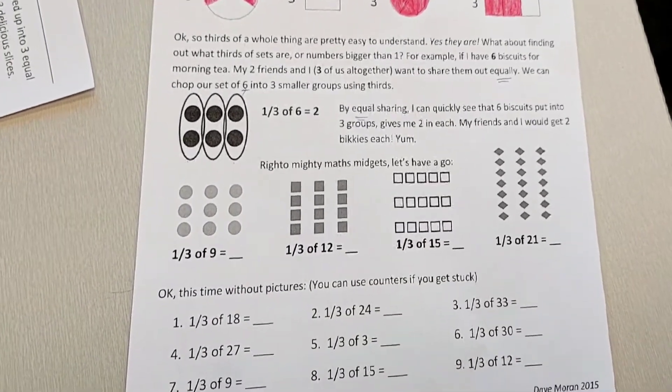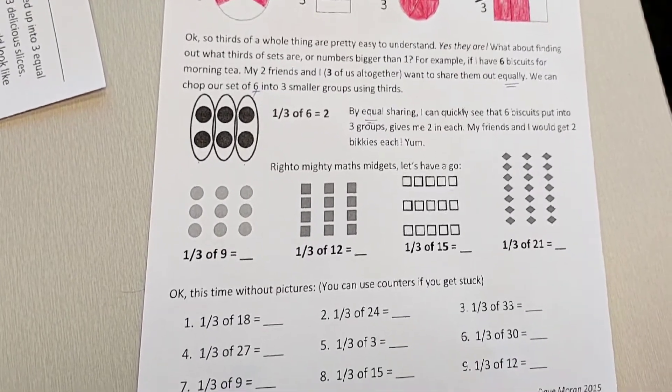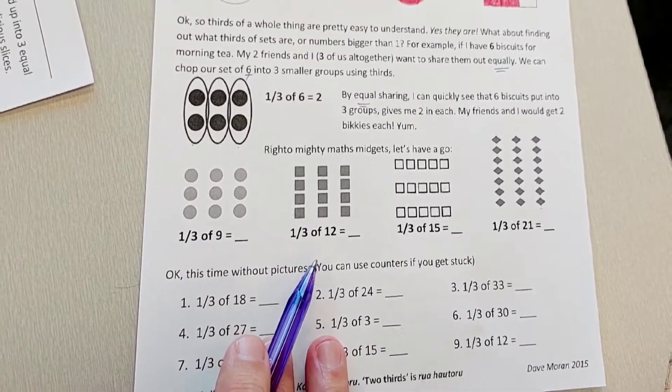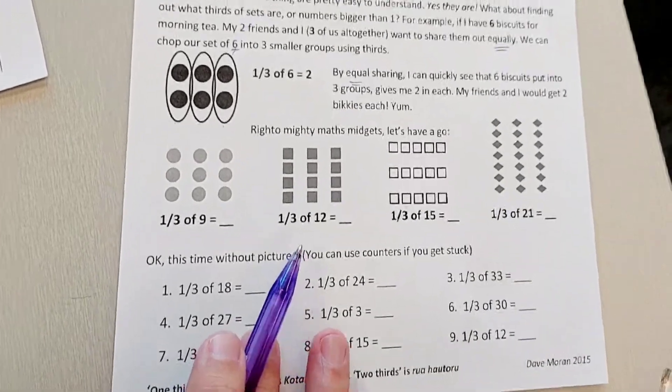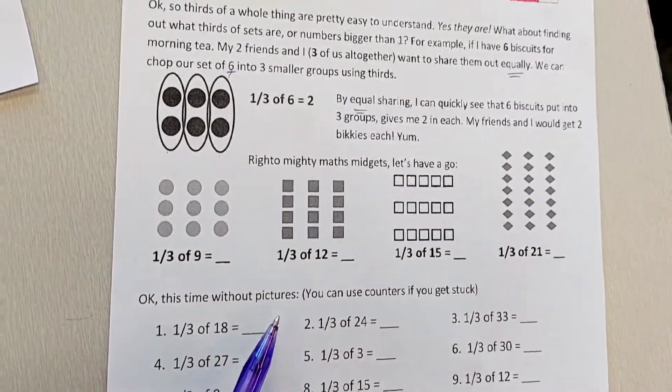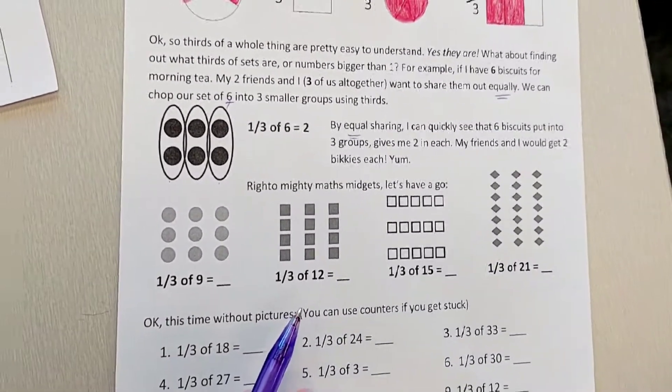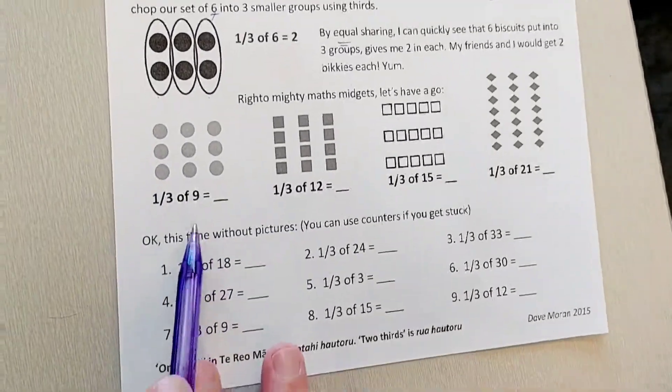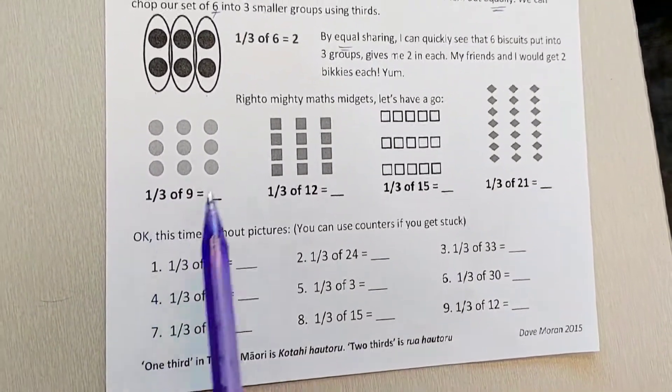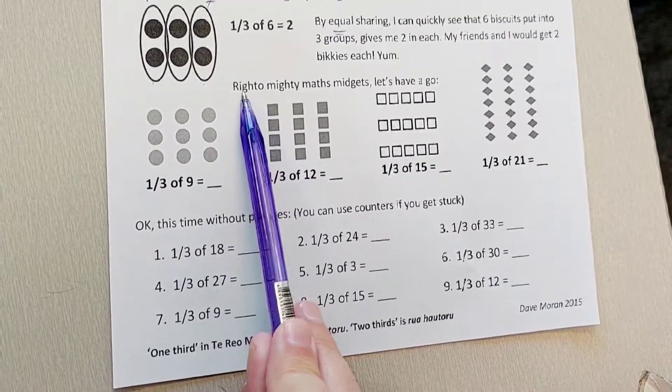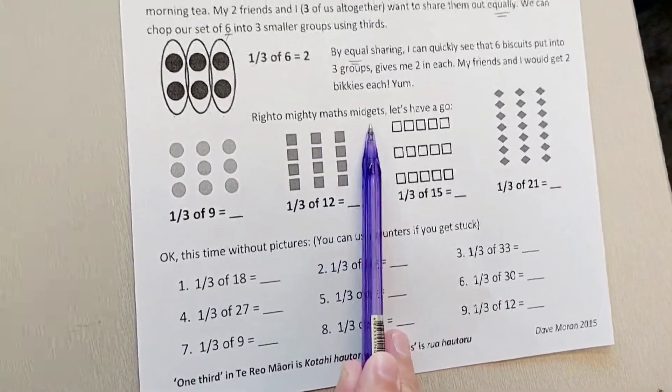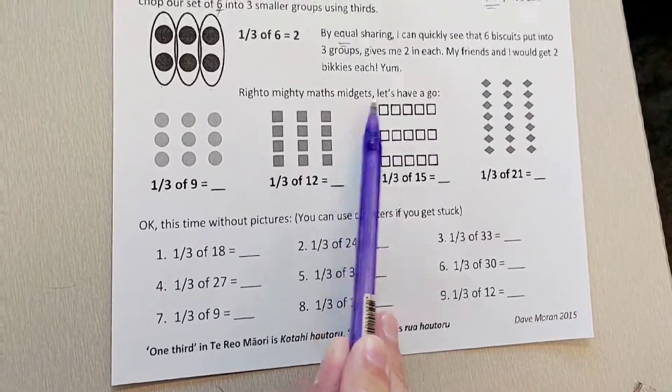What's your favorite biscuit? Probably one of the ones with chocolate on it. Yes. Chocolate chip. Delicious. Okay, so let's have a look at this next one. Righto mighty maths midget. Are you a midget? No. Let's have a go.